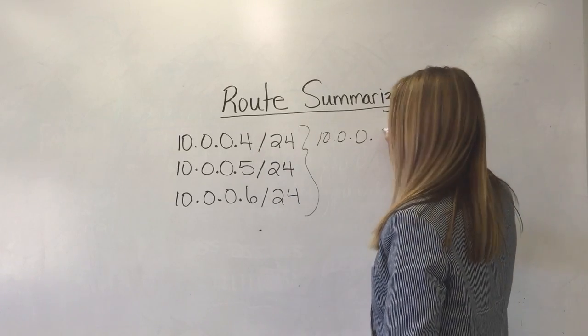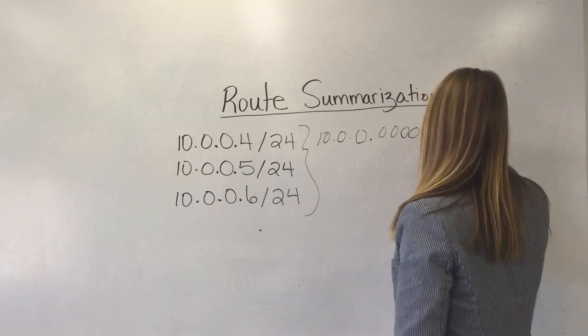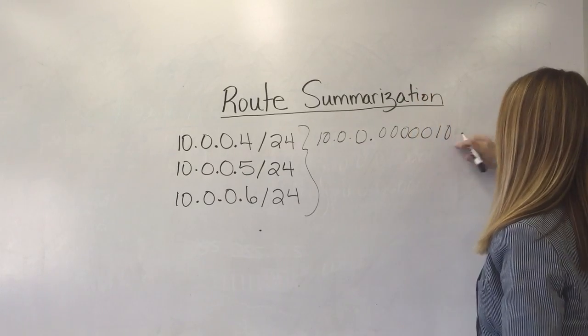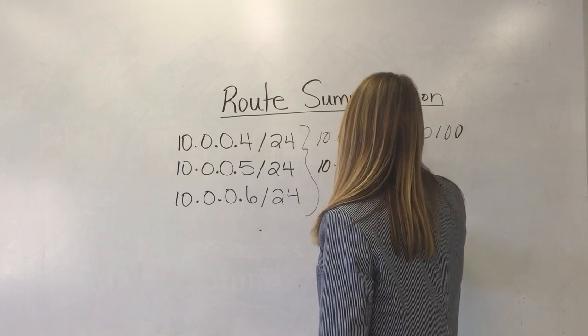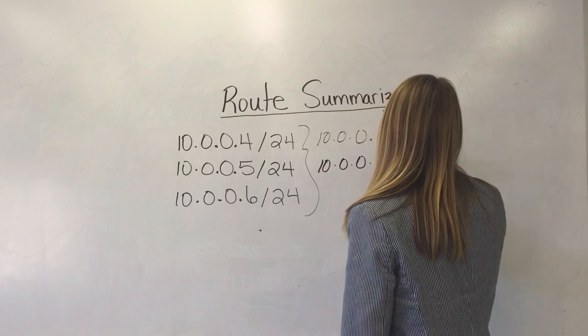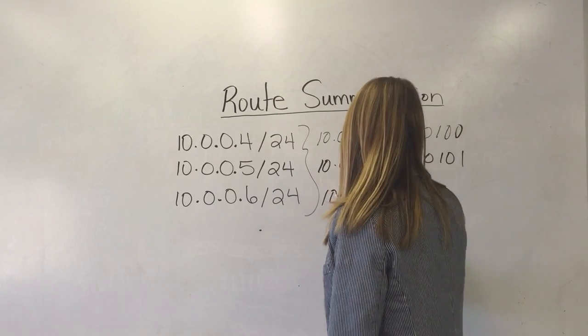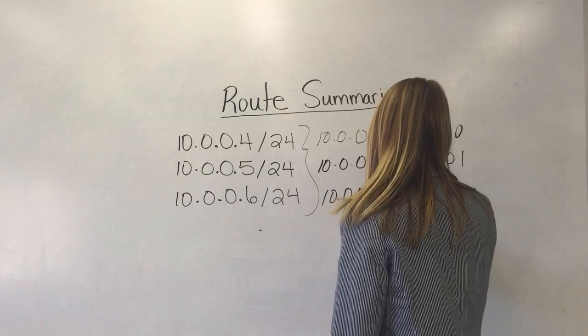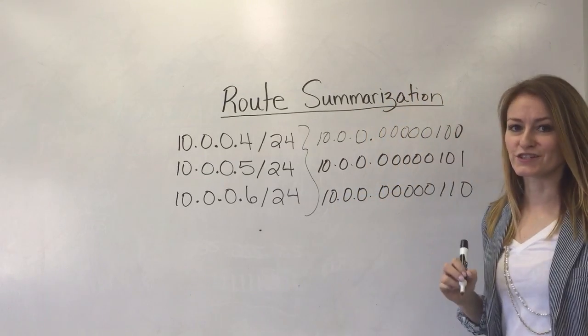So to convert four into binary we get the eight bits. That's four. So then five in binary. There's five. And there's six.